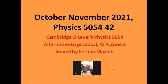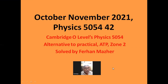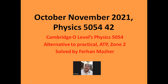Today we have set our hearts to solve an alternative to practical ATP paper. We have selected October-November 2021, 4-2 paper. This paper 4 belongs from zone 2, or you can say this belongs from variant 2. This paper has a time allowance of one hour, and there will be four questions in this paper. Let's start this paper.